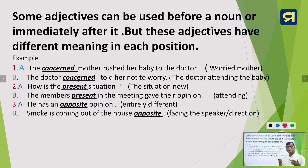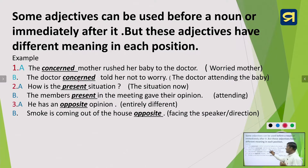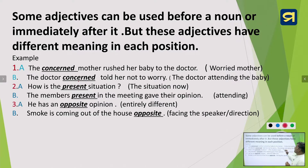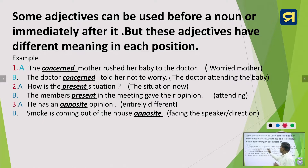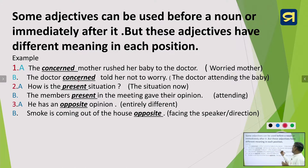When 'concerned' is used after the noun, it is post-positioned use of adjective. The meaning is different: when 'concerned' is used before the noun, it means 'worried mother.' But in 'The doctor concerned told her not to worry,' it refers to the particular doctor attending the baby — the specific doctor.